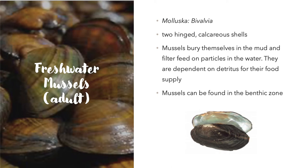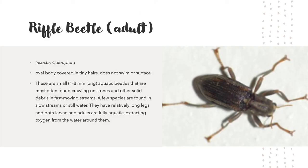Freshwater mussels bury themselves in the mud and filter feed on particles in the water. They are dependent on detritus for their food supply and can be found in the benthic zone. Riffle beetles are small aquatic beetles most often found crawling on stones and other solid debris in fast-moving streams. They have relatively long legs, and both the larvae and adults are fully aquatic, extracting oxygen from the water around them.